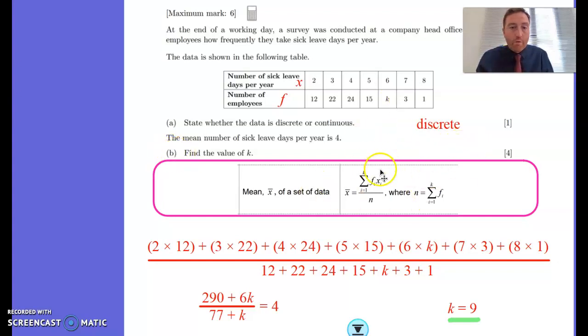There we go. So do look up in the formula booklet if you forget exactly what you've got to do. But it's the sum of the frequencies times the values. If you had a group frequency table, this would be frequencies times the midpoints. So that's something to bear in mind, similar topic.